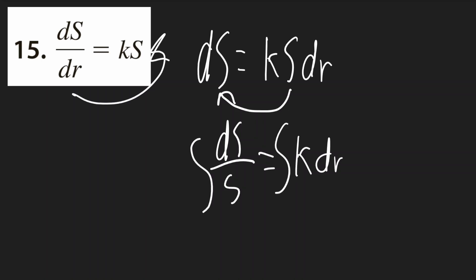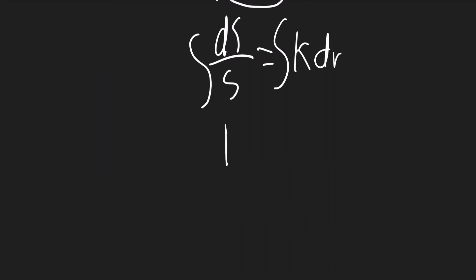Integrate both sides. And on the left, we'll get ln of the absolute value of s will be equal to, we can pull the k out, so it'll be just the integral of dr.